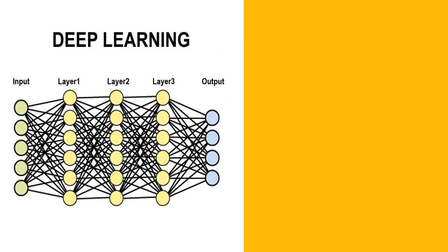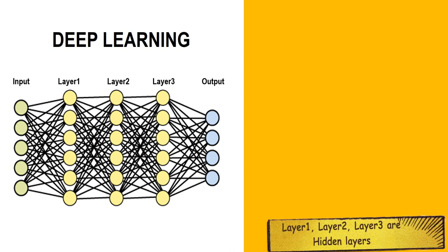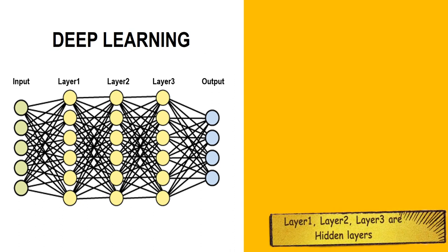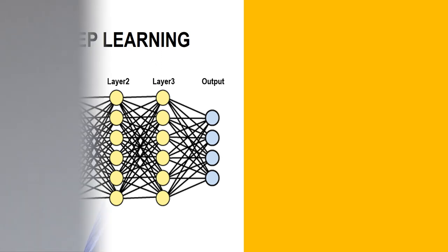In deep learning we have the input layer — the first layer — and the output layer. In between the input layer and output layer there are many hidden layers, which may range from 10 to 50 or even 100 to 150. Depending on the number of layers, the accuracy will increase.